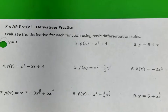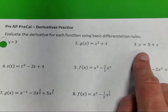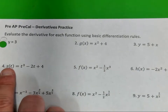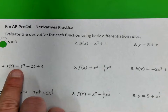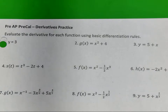Number 2, what is g prime of x equal to? 2x. Very good. Number 3, y prime is equal to? 1. Very good. Number 4, s prime is equal to? 3t squared minus 2. Very good. Number 5, f prime of x equals? 2x minus 3 halves x squared. Very good.